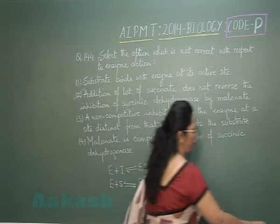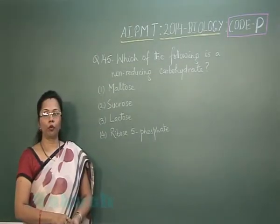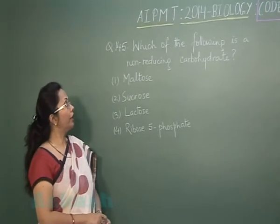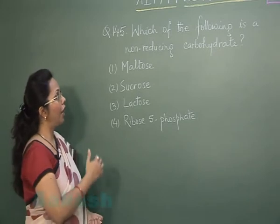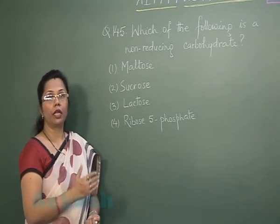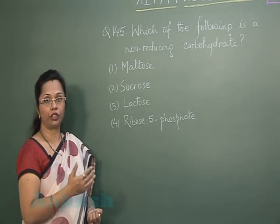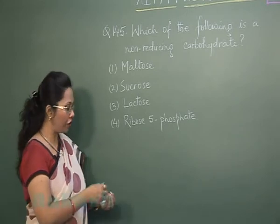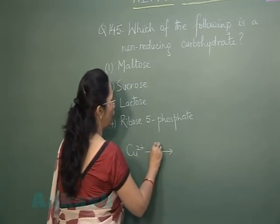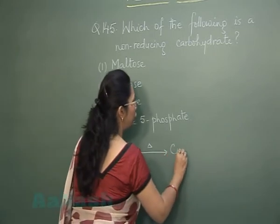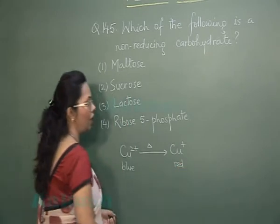Moving on to question 145: which of the following is a non-reducing carbohydrate? Any carbohydrate in which the aldehyde or ketonic group is free will give a positive test with Fehling's and Benedict's reagent, reducing the cupric ions when heated with Fehling's solution — the blue color changes to a red precipitate.